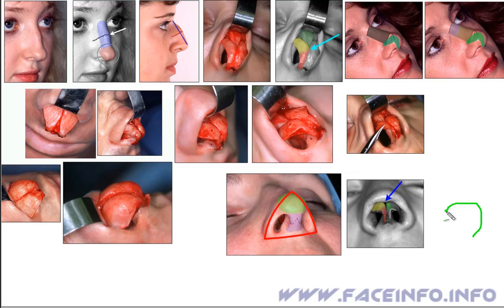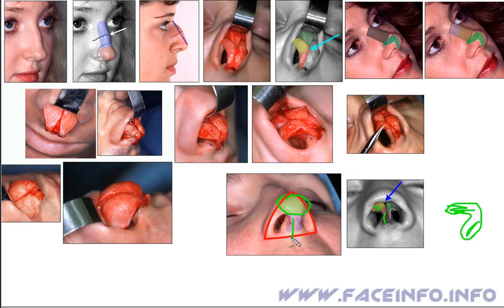Each cartilage has the shape of a hook with two stalks: the external and the internal. The tip of the nose is the band between them. The lower stalk forms the columella — this small column between the nostrils.